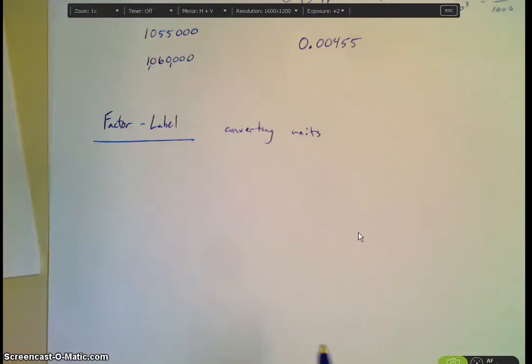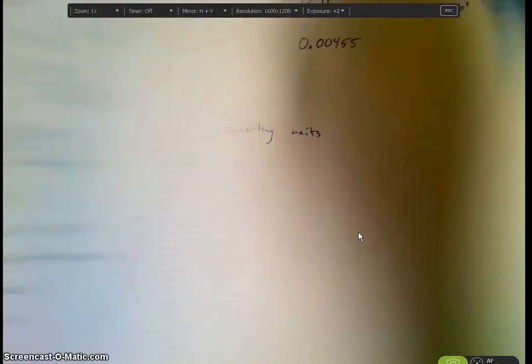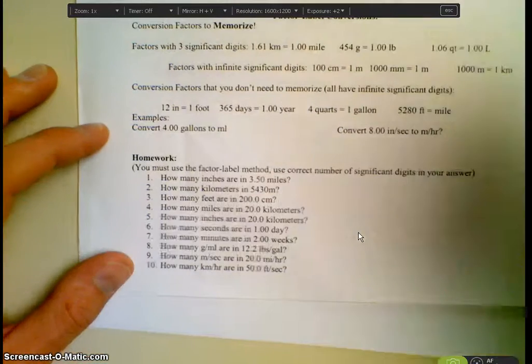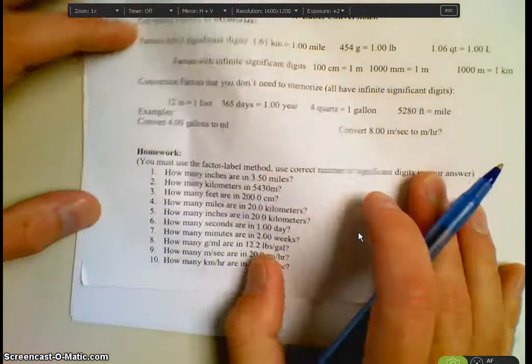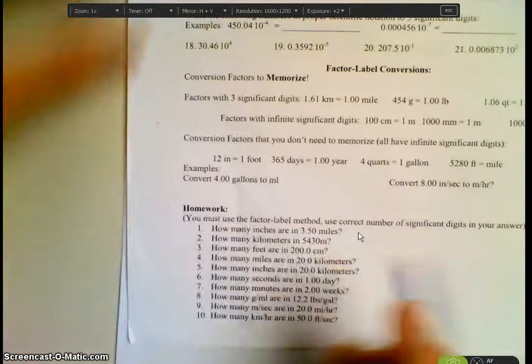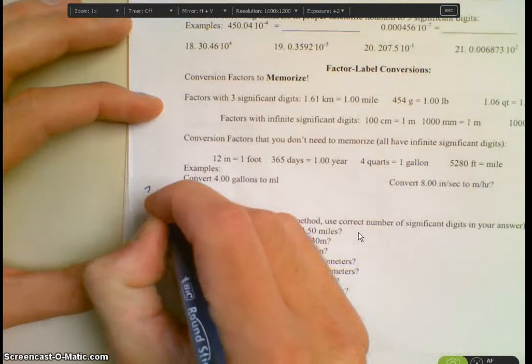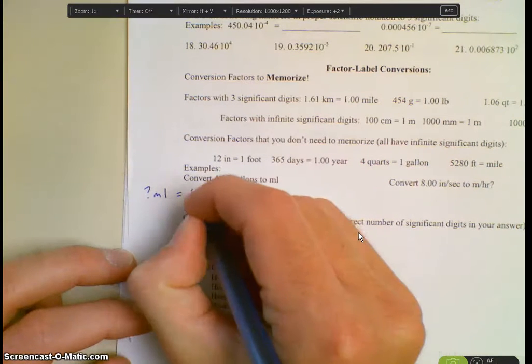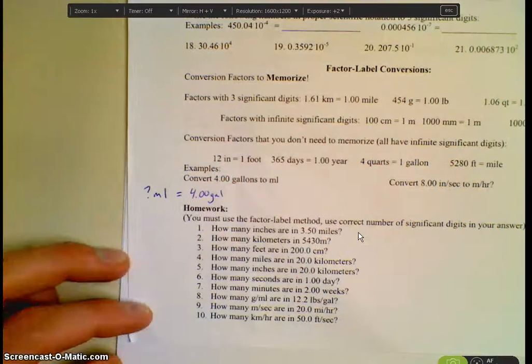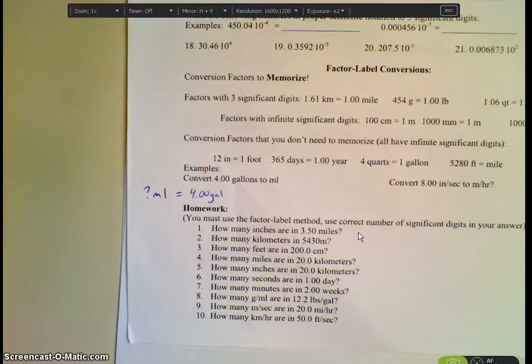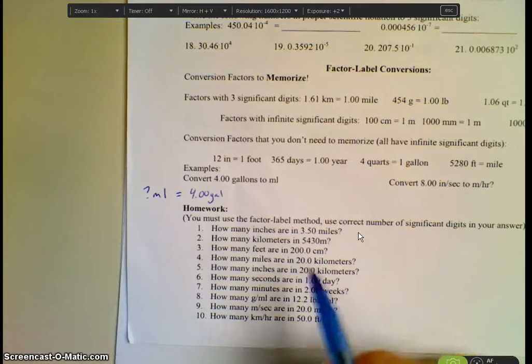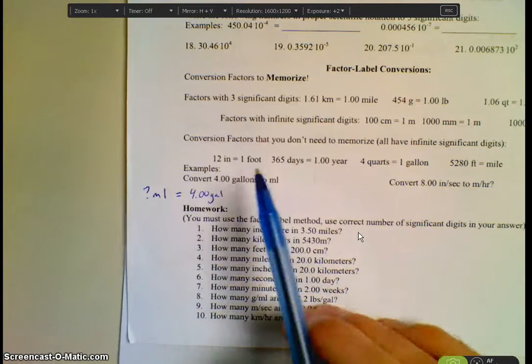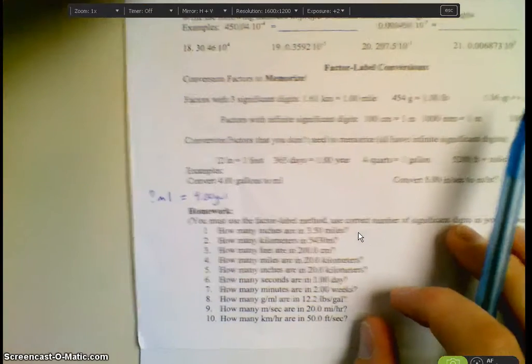Okay? So let's look at our first example. It gives us a bunch of conversion factors, some that you have to memorize and some that will be given to you. The first example is converting 4 gallons to milliliters. So always to set up. Let's start on the far left-hand margin here. And I'm going to put in question mark what I'm looking for. Okay? So always start with a question mark and what you're looking for in terms of your units. Equals and then what you're given. And we're given 4.00 gallons. Now, do we know a conversion between gallons and milliliters?